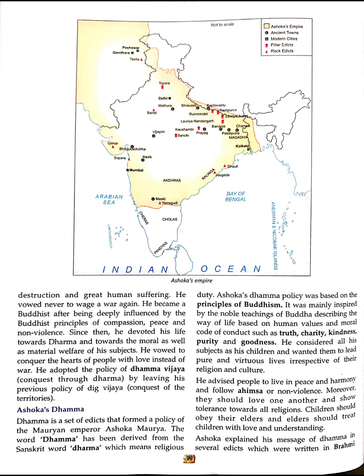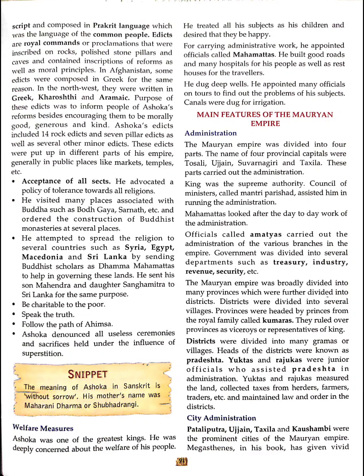Such values include truth, charity, kindness, purity, and goodness. He considered all his subjects as his children and wanted them to lead pure and virtuous lives irrespective of their religion and culture. He advised people to live in peace and harmony and follow ahimsa, or non-violence. They should love one another and show tolerance toward all religions. Children should obey their elders, and elders should treat children with love and understanding.